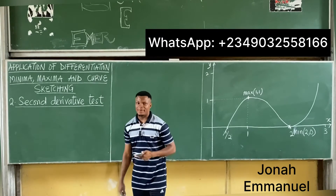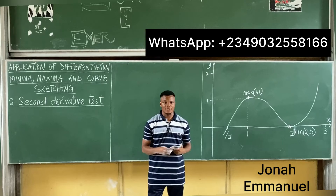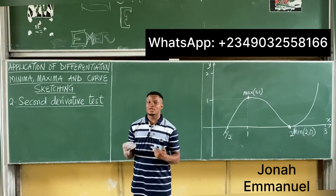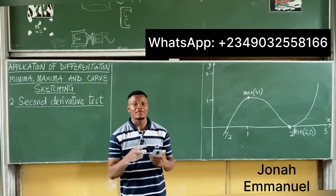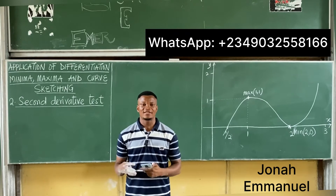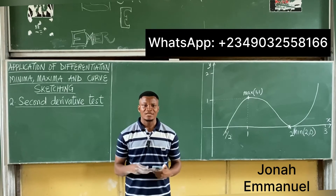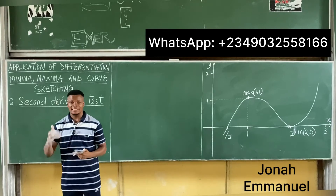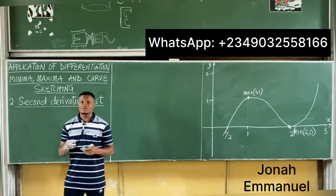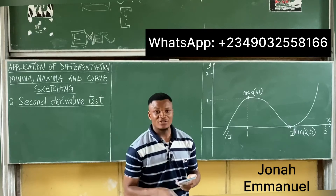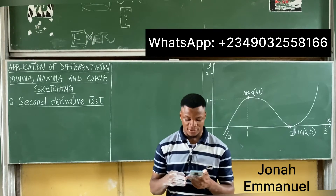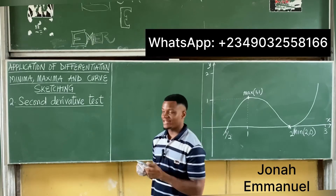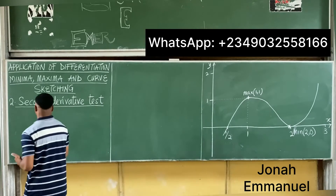Let's look at how to find minima, maxima, and how to sketch curves using the second derivative test. The second derivative test is actually a faster method of getting minima and maxima. Now, notice that a turning point is called a maximum if d²y/dx² is negative.